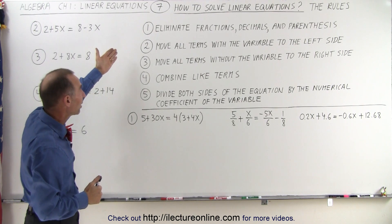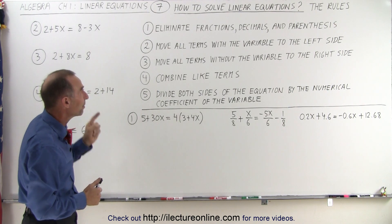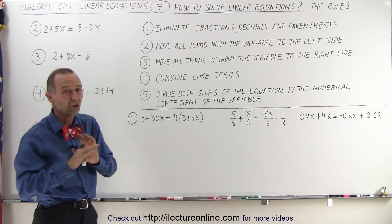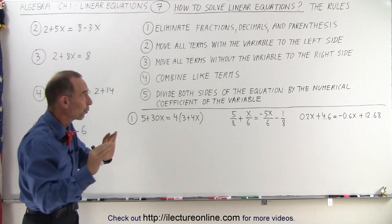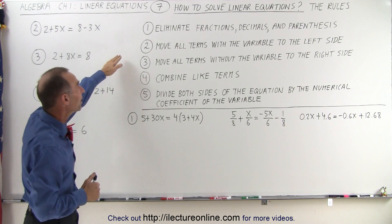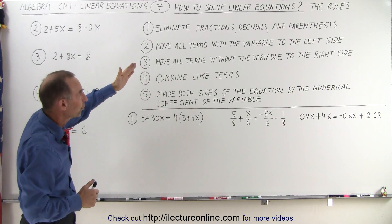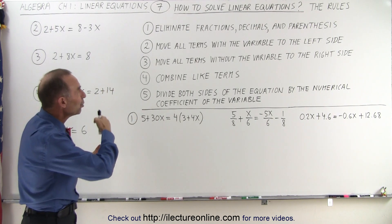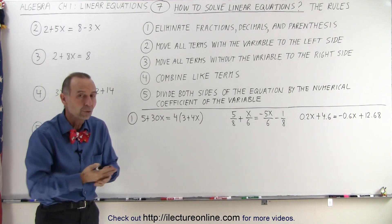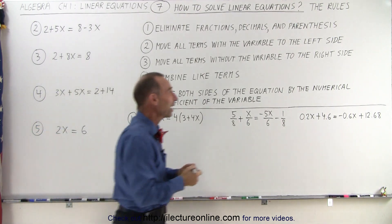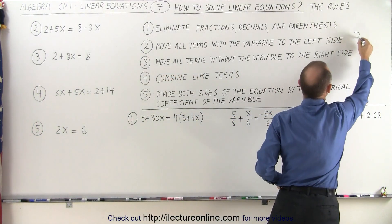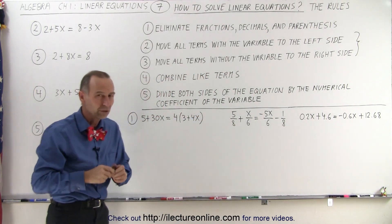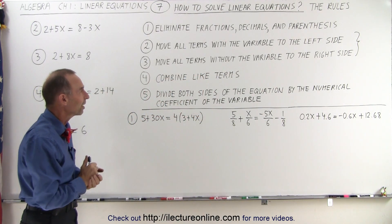The first rule is to eliminate all the fractions, decimals, and parentheses. It's usually a good idea to get rid of those first, right off the bat. The second thing we want to do is move all the terms that have the variable to the left side of the equation, and move all the terms without the variable to the right side. Sometimes we can do those two rules at the same time, which saves time and won't cause any problems.